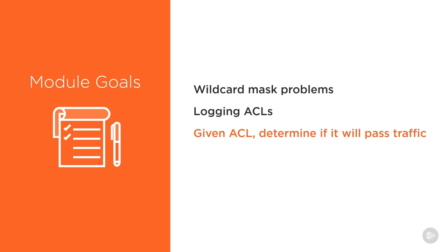Then we're going to look at some scenarios of access control lists, apply them and determine if they will pass traffic or not, and then take a look at correcting inaccurate access control lists so that traffic flows as we expect it to.